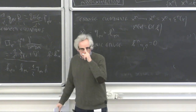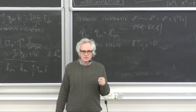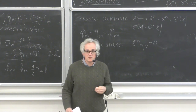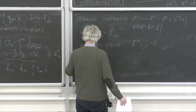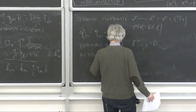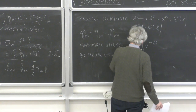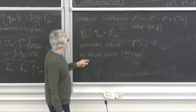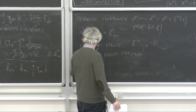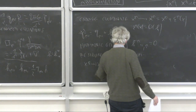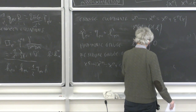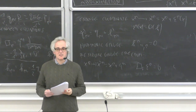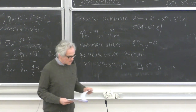Fixing the harmonic gauge does not exhaust all gauge freedom — there is residual gauge freedom. Indeed, if coordinates are in the harmonic gauge and you make a transformation such that □_F ε^μ = 0, then you remain in the harmonic gauge. So there is some residual gauge freedom.